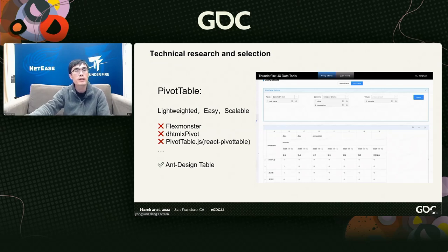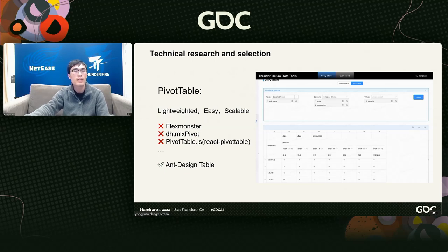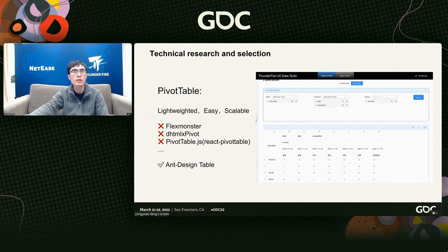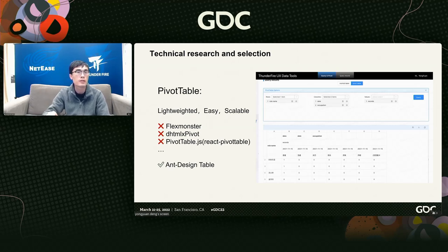So, how do we achieve the pivot table based on our stack? We investigated some public technology solutions. Commercial software like FlexMonster and DHTMLX Pivot is not suitable for us since it costs much money. Open-source pivot table components also aren't suitable because the UI is not friendly enough and they are not easy to extend. So we decided to use the Table component of Ant Design to extend our implementation.